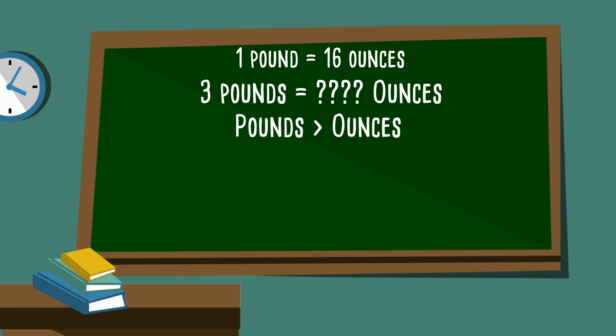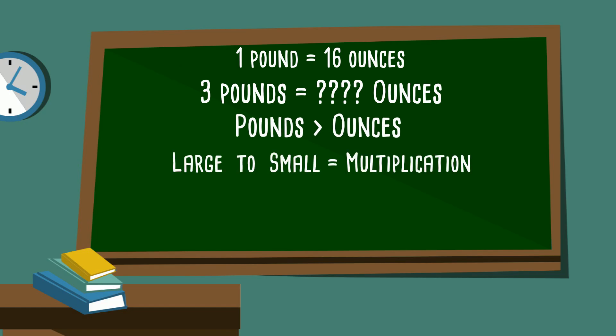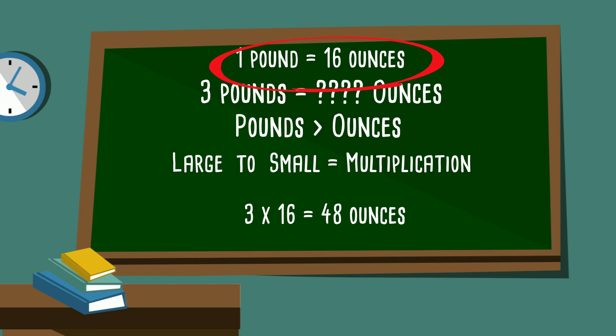We know that pounds are larger than ounces. When you go from large to small you multiply, so we multiply 3 times 16, because 1 pound equals 16 ounces. When you do that you get 48 ounces.